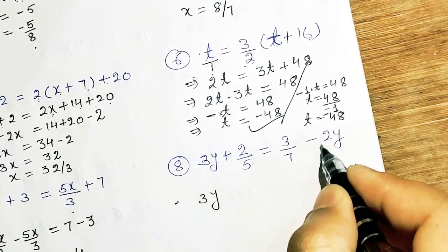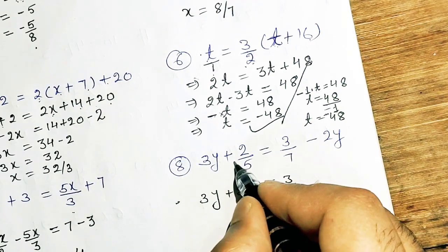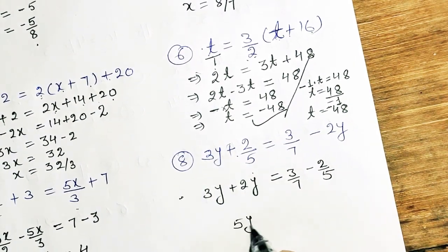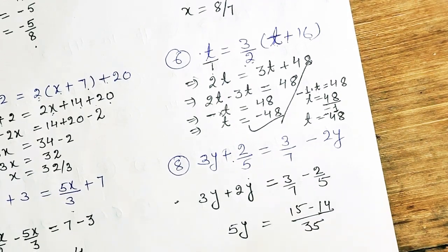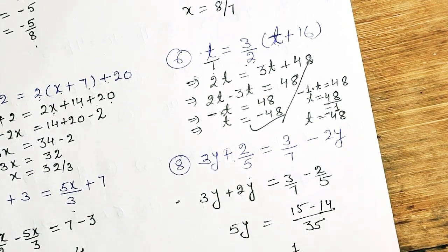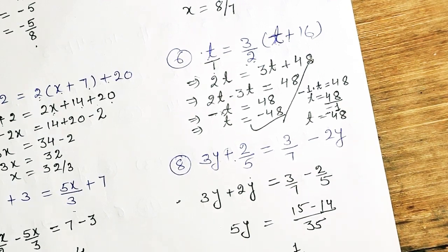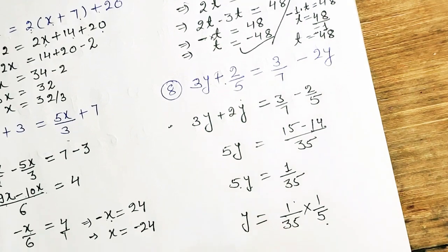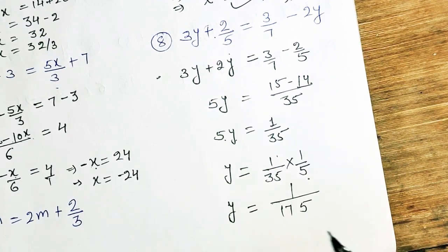Question 8: 3y minus 2y upon 7 equals 2 by 5. The sign of 2 by 5 is plus, so it will move to the RHS as minus 2 by 5. Taking LCM of 7 and 5 which is 35: we get (15 minus 14) upon 35, giving 1 upon 35. So 5y times 1 upon 35 gives y equal to 1 upon 35 divided by 5, which equals 1 upon 7.